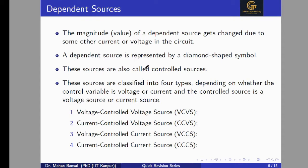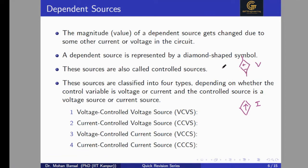In the case of a dependent source, the magnitude or value of the source will change according to some parameters like current or voltage in the circuit of any other branch. It is represented by a diamond shape. If polarity is given inside the diamond shape, it is a voltage source; if an arrow is given inside the diamond shape, it is a current source. If the symbol is a circle shape, it is an independent source.